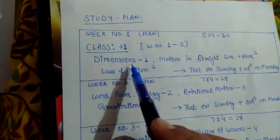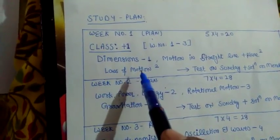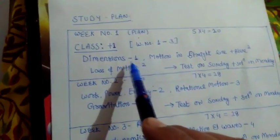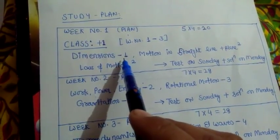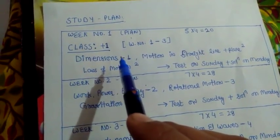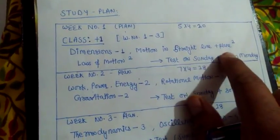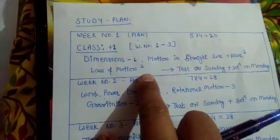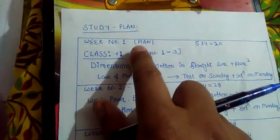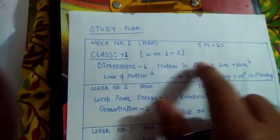From mechanics, there are five to eight questions. In the first week, we will take Dimensions — I know dimensions is an easy lesson, but one question comes from dimensions, and one question's value is very much because it is of four marks. From Motion in a Straight Line and Plane, there are two questions. From Newton's Laws of Motion, there are two questions. So in the first week, I will discuss these three main lessons.